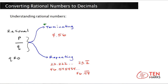A repeating decimal does not end at a fixed number of decimal places. Instead, it has a repeating pattern of digits, or a sequence of digits that continue on forever after the decimal point. For example, you have the number 23.2222, and this would continue on forever. You can symbolize this by putting a bar over the digit that repeats, and that means the digit 2 will repeat forever for an infinite number of decimal places.